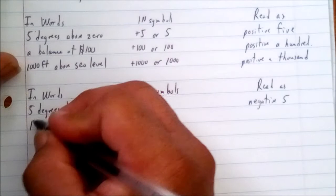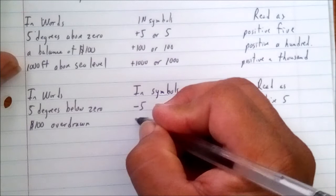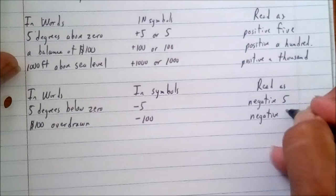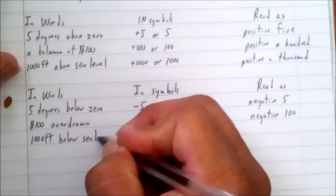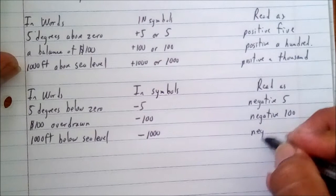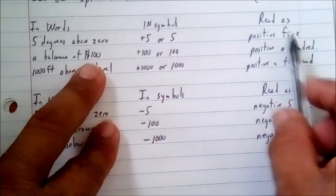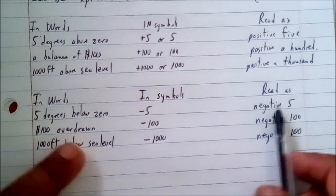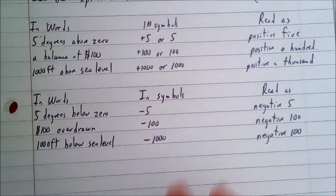A balance of a hundred dollars overdrawn — meaning you withdrew more than what you actually have — is written as minus a hundred, which is negative one hundred. One thousand feet below sea level is written as minus a thousand, or negative a thousand.